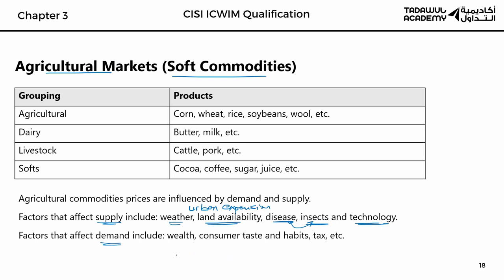Factors that affect demand are wealth — can they afford these? Consumer tastes — do they like this? Do they prefer cocoa, chocolate, coffee, or tea? Are people having more sugar? Yes, people are having more sugar. And habits. Tax is another factor — when the government taxes certain items. For example, the UAE government puts a tax on sugar to lower demand, but a lot of people are still drinking the same amount of Coca-Cola and Pepsi.